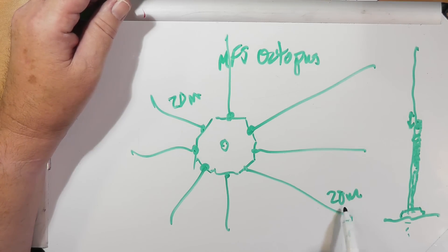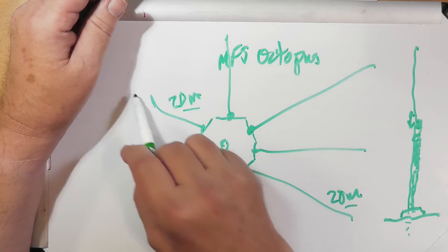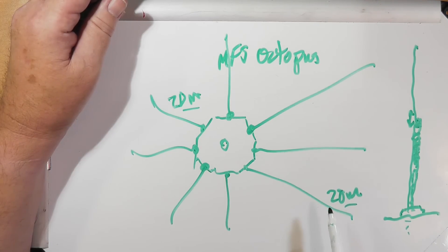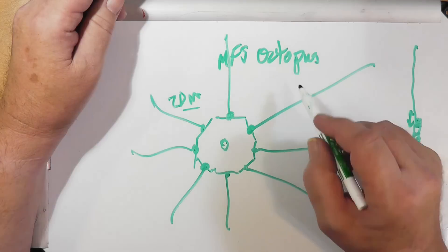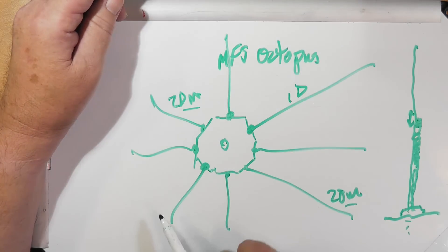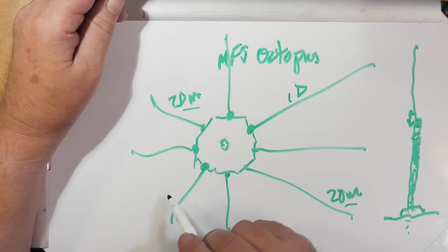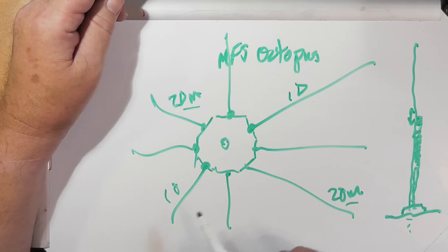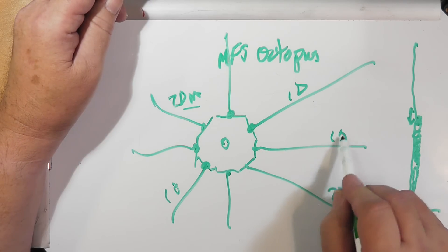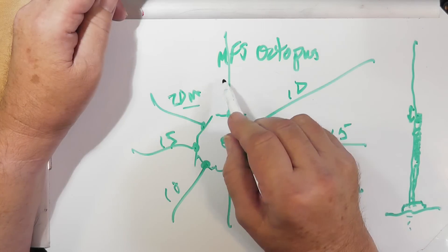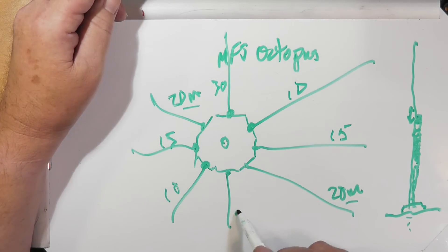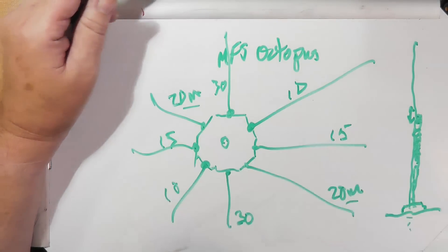So if you were to put two of these and put them together back to back, you've got a dipole fed in the center. This might be 10 meters over here to 10 meters. This could be 15 to 15 and this could be 30 and this 30. So you get four bands.